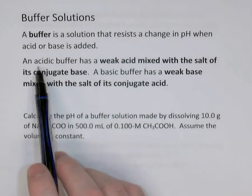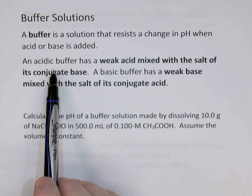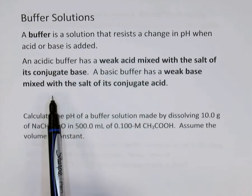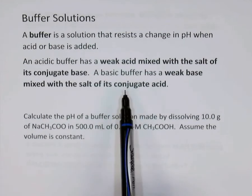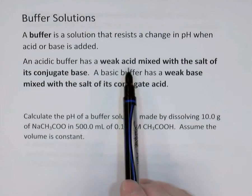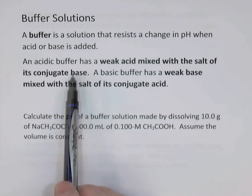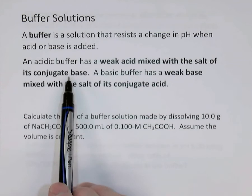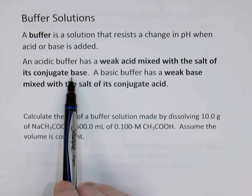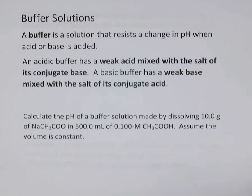Buffers contain mixtures of weak acids and their conjugate bases. If you have a buffer in an acidic pH range, it will have a weak acid with the salt that contains its conjugate base. Basic buffers, at pH above 7, contain a weak base and the salt of its conjugate acid. When you add an acid to the buffer, the base neutralizes it; when you add a base, the acid neutralizes it.